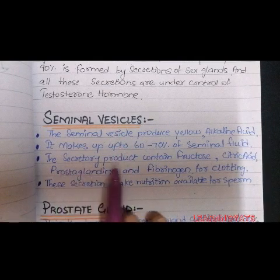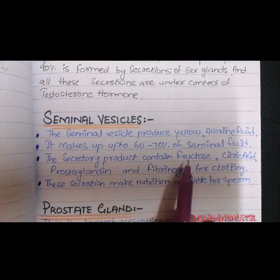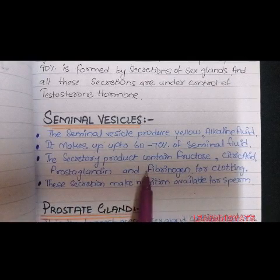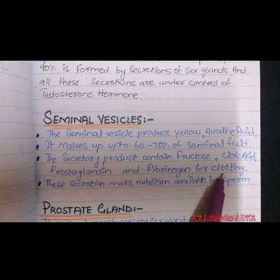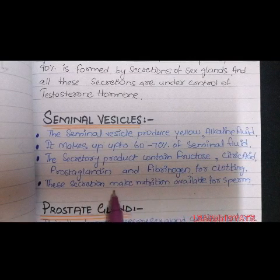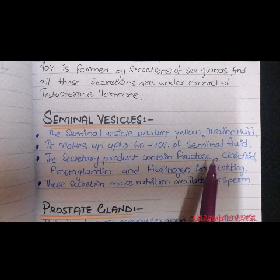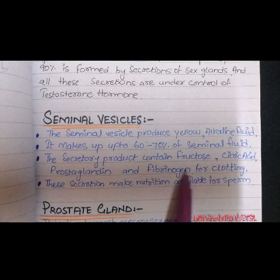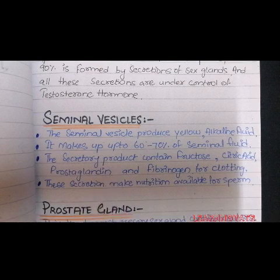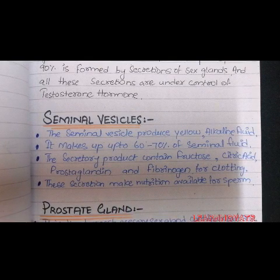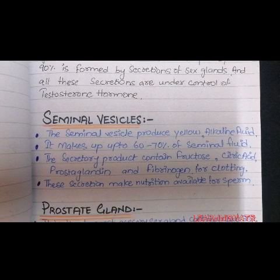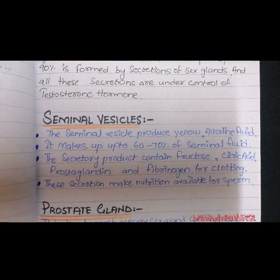The secretion products of the seminal vesicles contain fructose, citric acid, prostaglandins, and fibrinogen. The fibrinogen acts as a clotting factor for the semen, while fructose serves as the major nutritional source for the sperm. The citric acid and prostaglandins also act on sperm maturation, clotting, and nutrition — all provided by the seminal vesicles, which contribute about 60-70% of the seminal fluid.